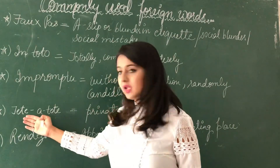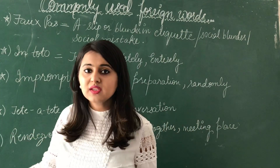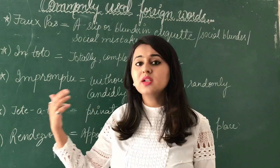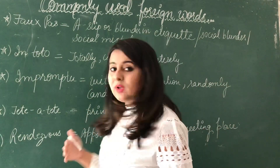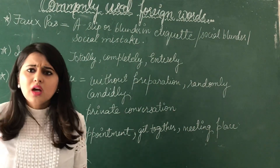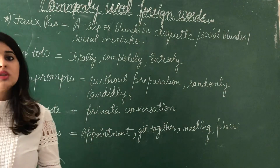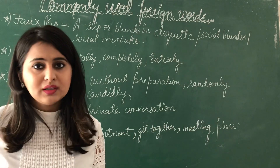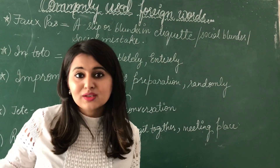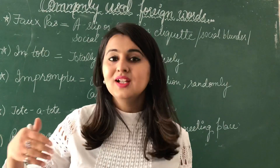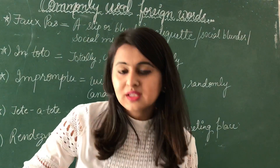The next word is 'tête-à-tête', spelled T-E-T-E-A-T-E-T-E. Tête-à-tête means a private conversation — something we don't want to disclose to everybody, a cozy private conversation. For example: there was little chance of a tête-à-tête with my mom at the wedding function. Or: let me show you the place where before marriage we used to have tête-à-têtes — our private conversations.